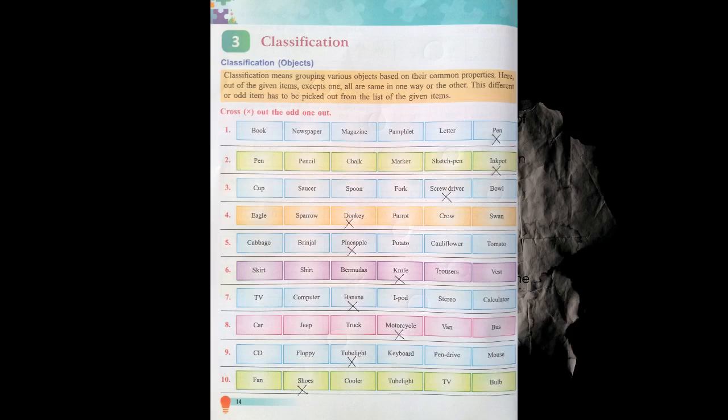Now: TV, computer, banana, iPod, stereo and calculator. All are devices and banana is only a fruit, so banana is the odd one. Now: car, jeep, truck, motorcycle, van and bus. Motorcycle will be the odd one because it's a two-wheeler and all the others are four-wheelers or more than four-wheelers.